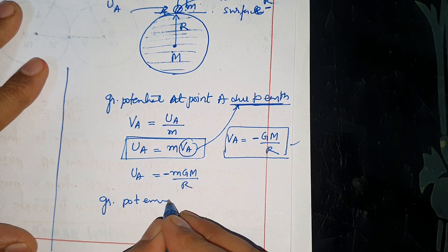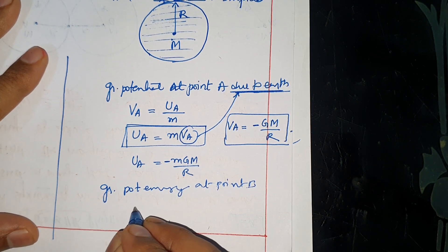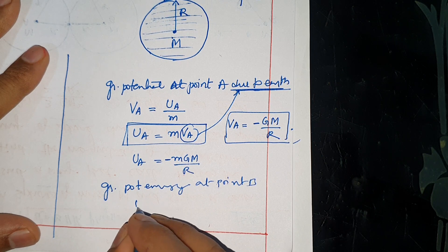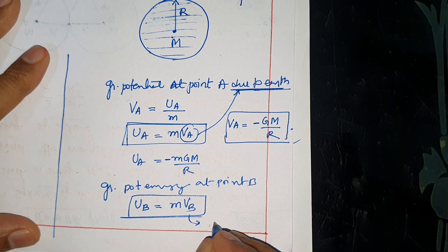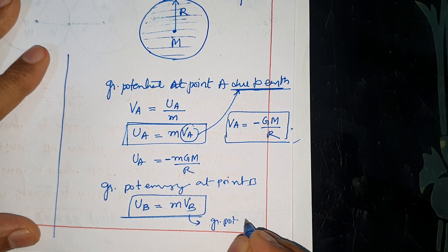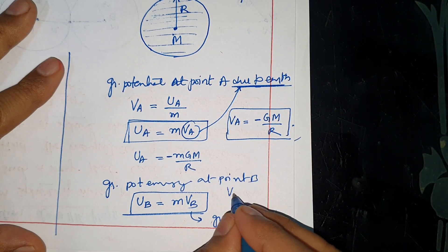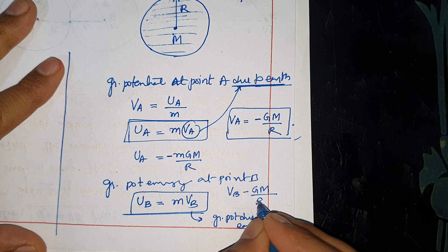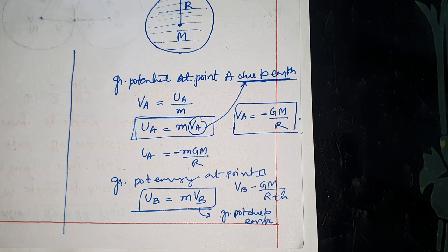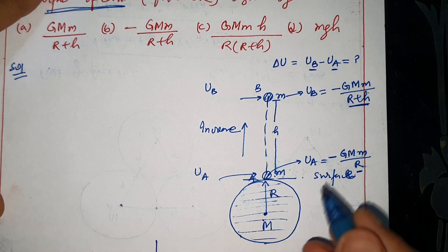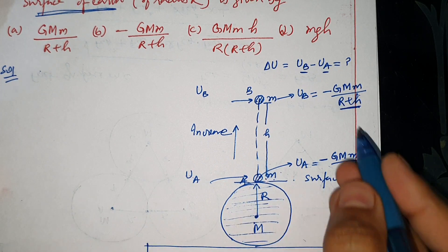Similarly, to find gravitational potential energy at point B: Ub equals m times Vb, where Vb is gravitational potential due to Earth. The potential at point B is minus G capital M over R plus h. Putting this in, we get the potential energy at point B. This should be clear. This question doesn't require this additional explanation, but I've given it to you.